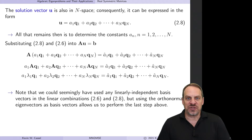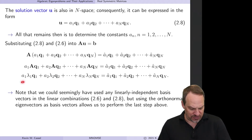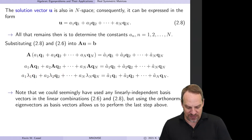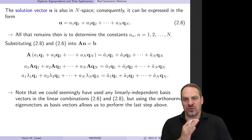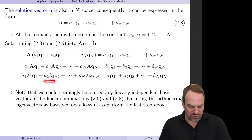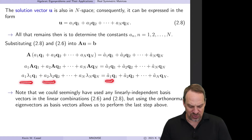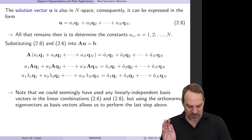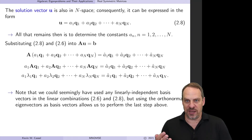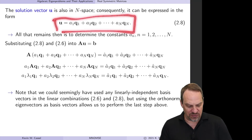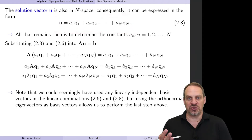Looking at both sides, we have a constant times Q1 plus a constant times Q2 on the left, and on the right a constant times Q1 plus a constant times Q2. In order for these two vectors to be equivalent, the coefficients corresponding to each Qn on the left and right-hand sides must be equal. So A1 times Lambda1 equals A1-hat, A2 times Lambda2 equals A2-hat, and so on. This gives us an expression for each A coefficient, from which we can form the linear combination and get the solution U.